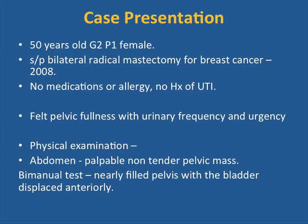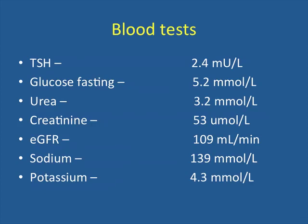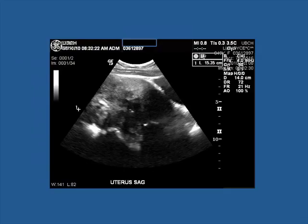I'll start with one of the recent case presentations. It's a 50-year-old female, G2P1. In 2008 she had a bilateral radical mastectomy for breast cancer, without any adjuvant treatment. There are no other medical concerns, no allergies, and no history of urinary tract infections. The last few months she felt pelvic fullness with urinary frequency and urgency she hadn't experienced in the past. On physical examination she is quite a slim lady. There was a palpable, non-tender pelvic mass, and the bladder was displaced anteriorly on bimanual examination. Her blood tests, renal function, CBC, and urine chemistry were all quite normal.